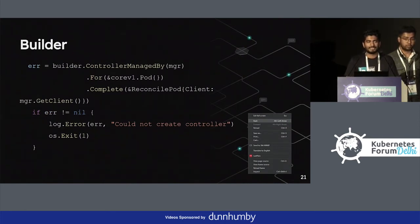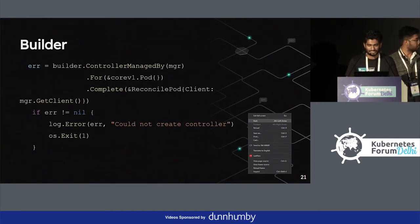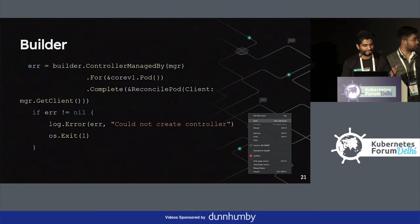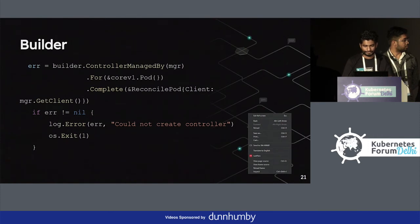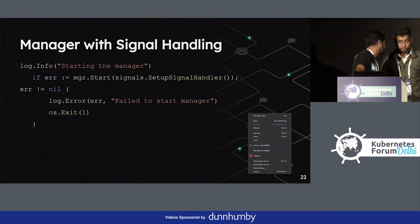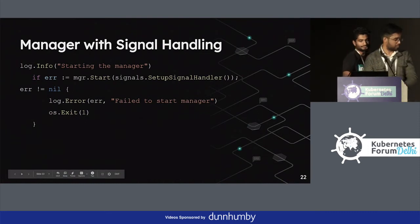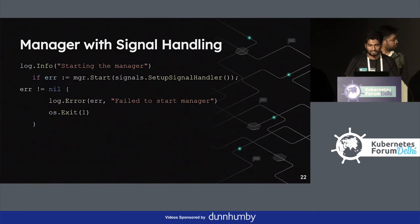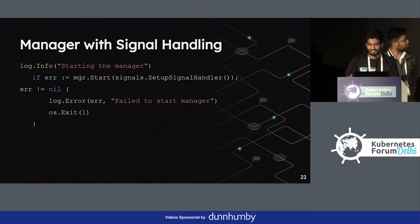Instead of having to build the controller separately — setting it up, setting a watch on it — you can also use the Builder, which is part of Controller Runtime. It wraps other Controller Runtime libraries and exposes simple patterns for building common controllers; this is a much simpler way to get started. A controller must be started by calling Start on the manager. The SetupSignalHandler registers for SIGTERM and SIGINT signals. A stop channel is returned which is closed on one of these signals. If a second signal is caught, the program terminates with exit code one.